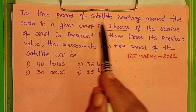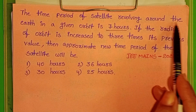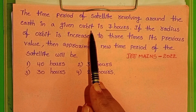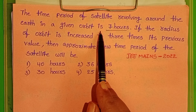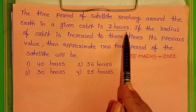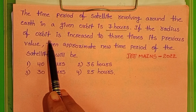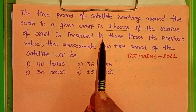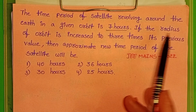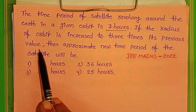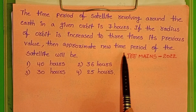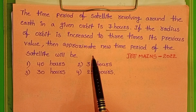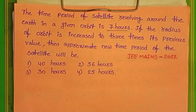The time period of a satellite revolving around the earth in a given orbit is 7 hours. If the radius of the orbit is increased to 3 times its previous value, then find the approximate new time period of the satellite.